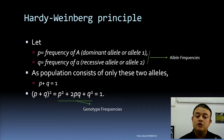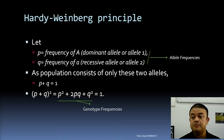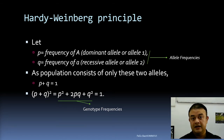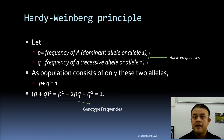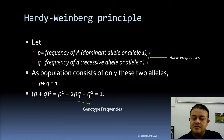The second part of the principle is that this genotype frequency is static — it doesn't change from generation to generation. It will be exactly the same, given there are no violations of the assumptions. Those assumptions are that no evolutionary mechanisms are occurring: no natural selection, no drift, no migration, no mutation, and no assortative mating.